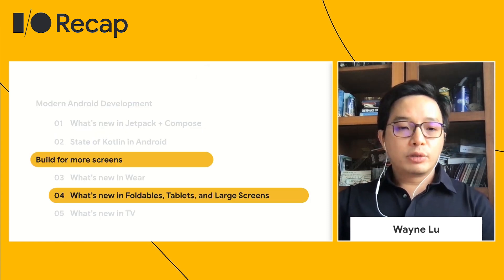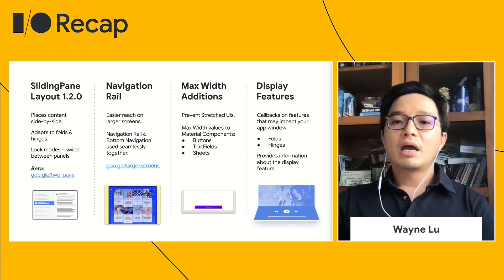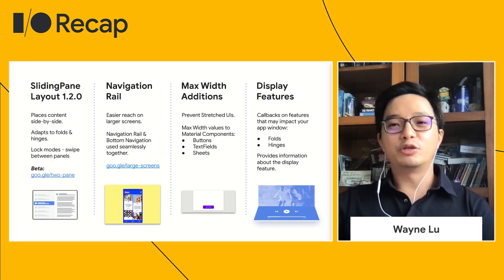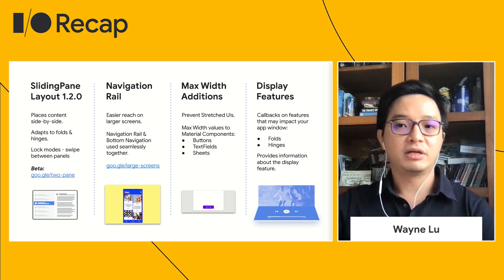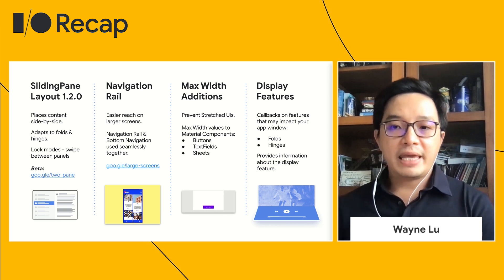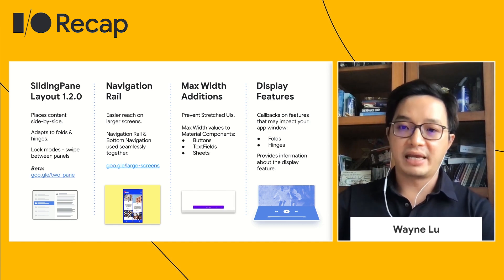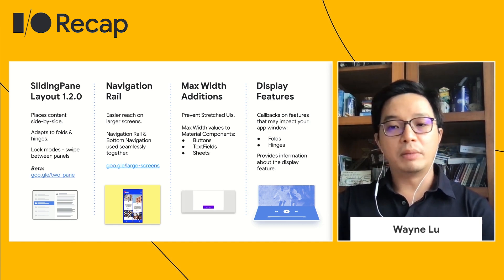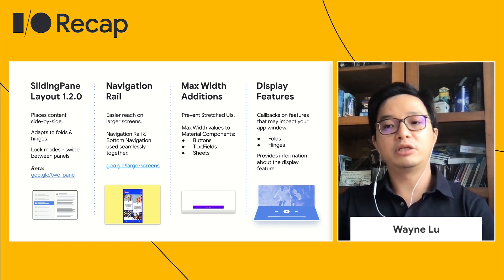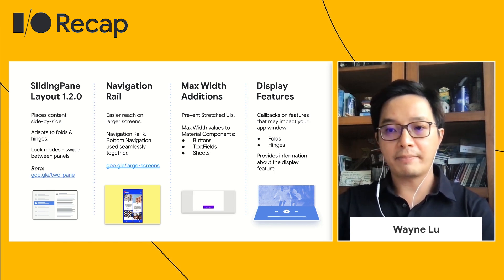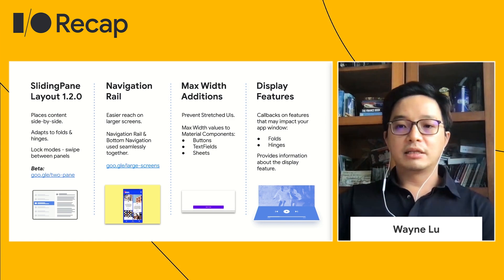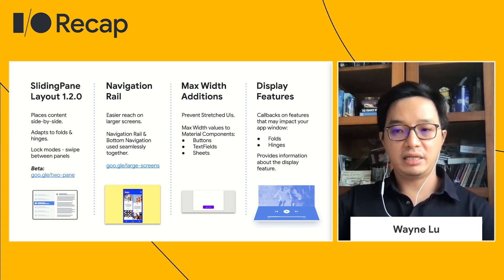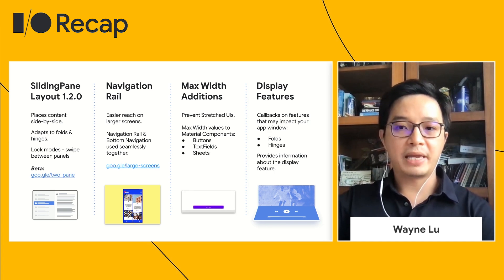Let's talk about foldables, tablets, and large screens. It's important to build a responsive user experience to scale your UI. For Sliding Pane Layout — one of the most common adaptive layouts — one way is to implement a list-detail pattern on the sidebar. For example, a messaging app has a messaging list on the left and message details on the right. The library is now aware of and updates to folds and hinges. We have also introduced lock modes, allowing you to control the swipe behavior when the panes overlap.